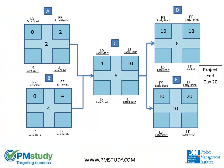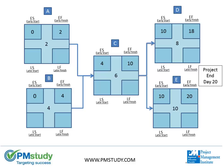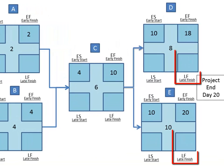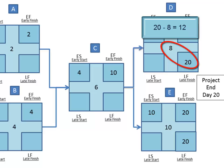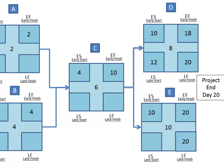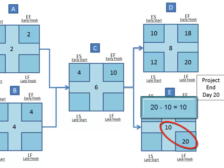Now we will go backwards through the schedule network diagram to determine the latest each task can start and end without increasing the project duration or impacting the successor tasks. We start by putting in the latest time that the two tasks ending the project can complete. Since the duration of the project is 20 days, the latest that Task E and D can end is the end of day 20, so we put 20 for Task D and 20 for Task E. Now we calculate the latest day Task D can start: subtract the duration of 8 from the latest finish of 20 to get 12. For Task E, subtract 10 from 20 to get the late start of 10.